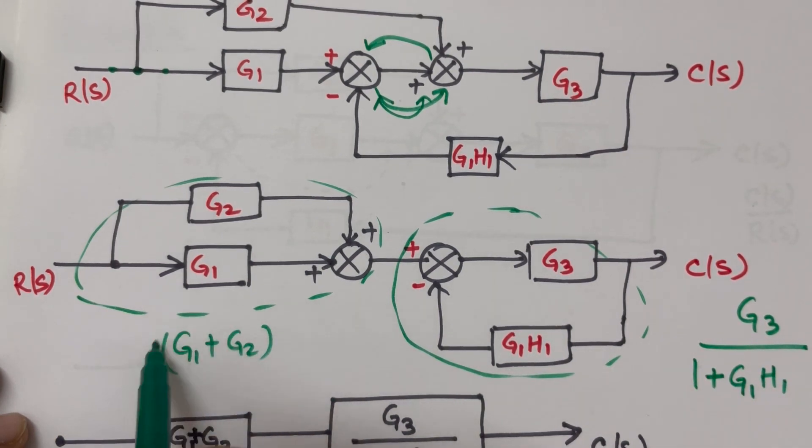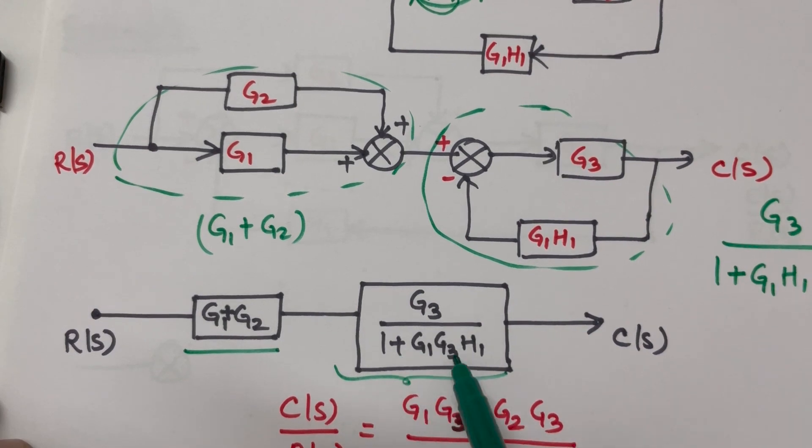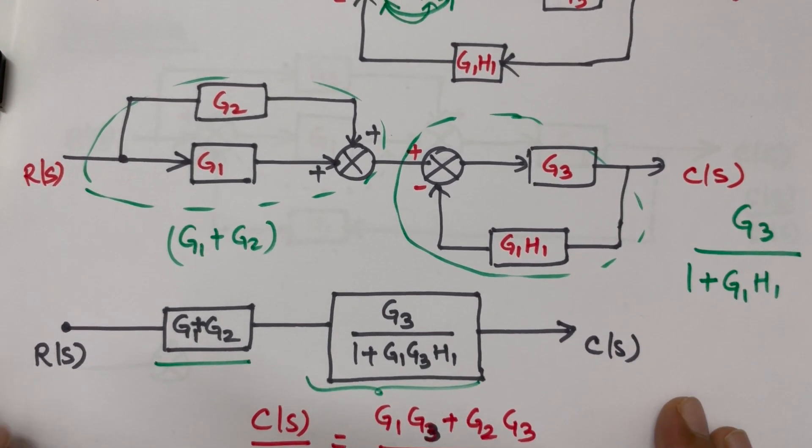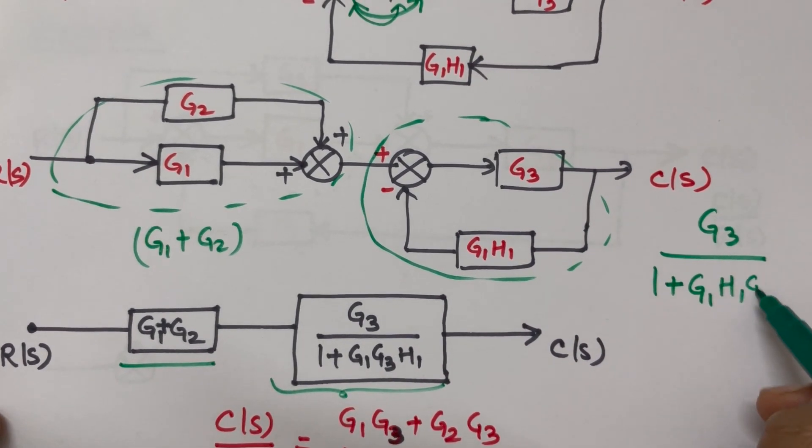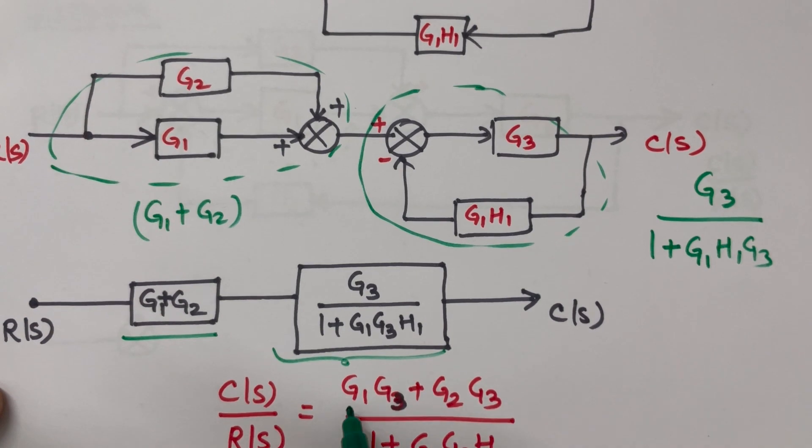So we have G1 plus G2 one block, another block is this block, and both are in series: G1 plus G2 block and G3 by 1 plus G1 G3 H1 block which we have just found out here. Now these blocks are in series, so we can multiply them together.